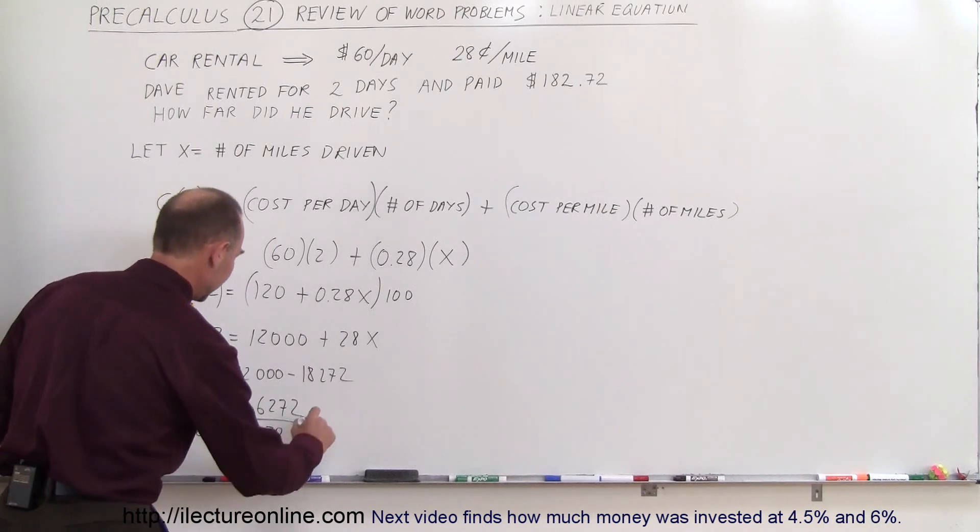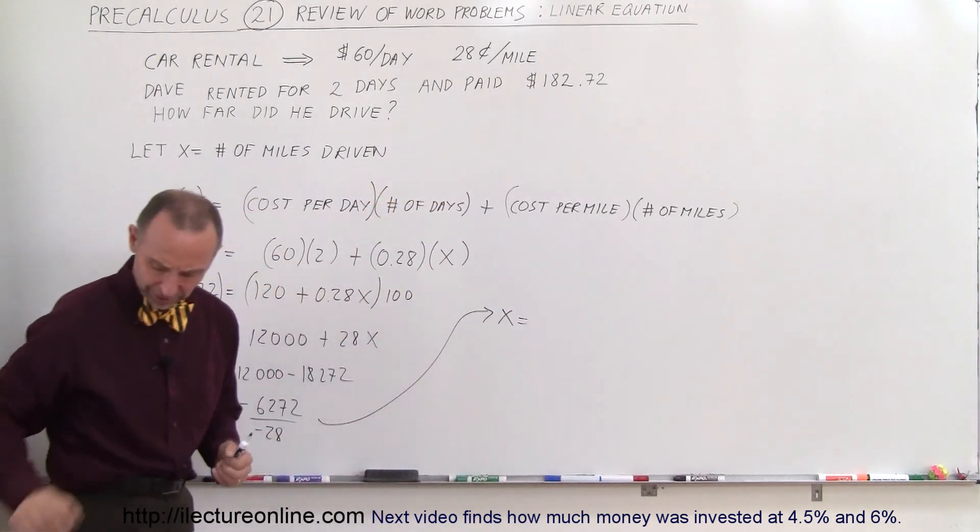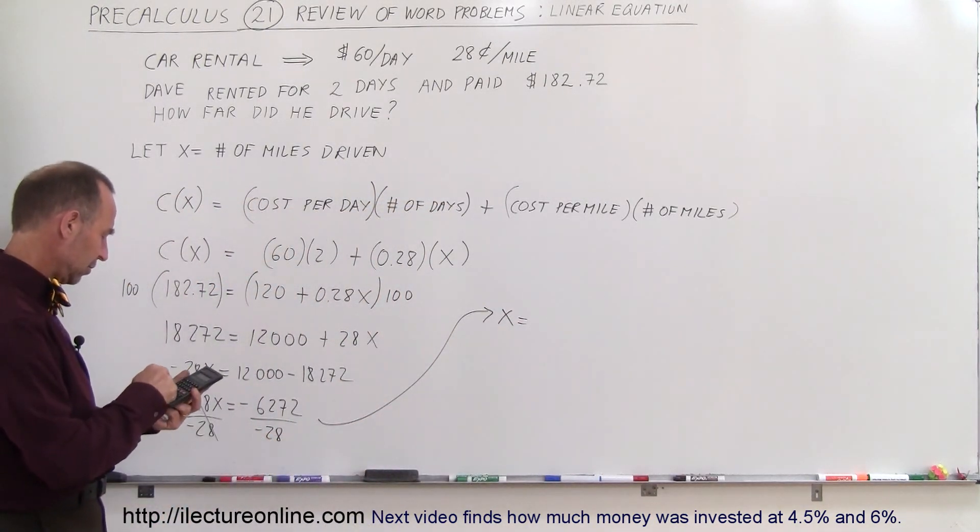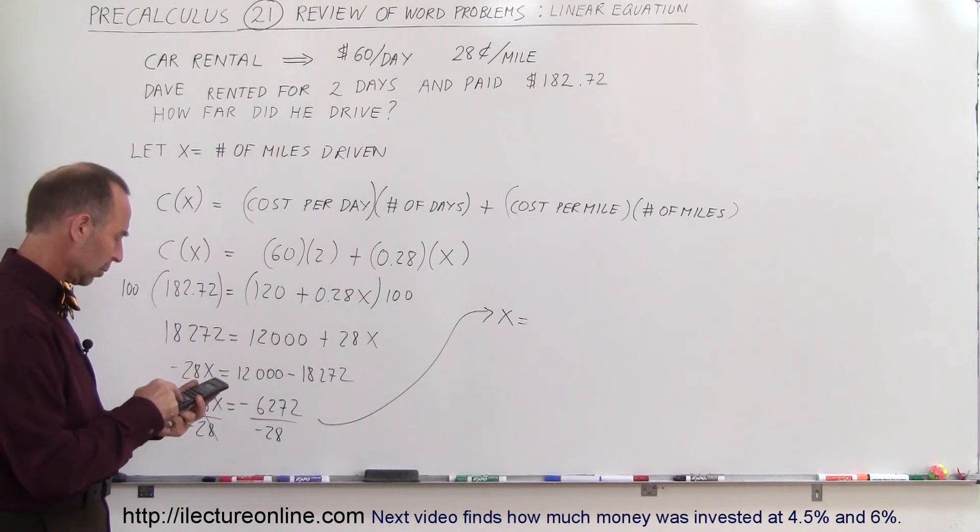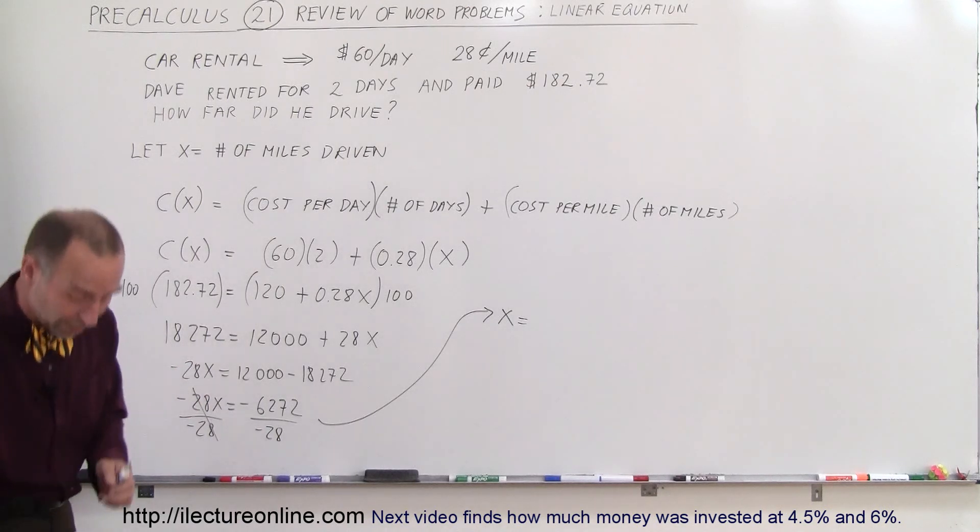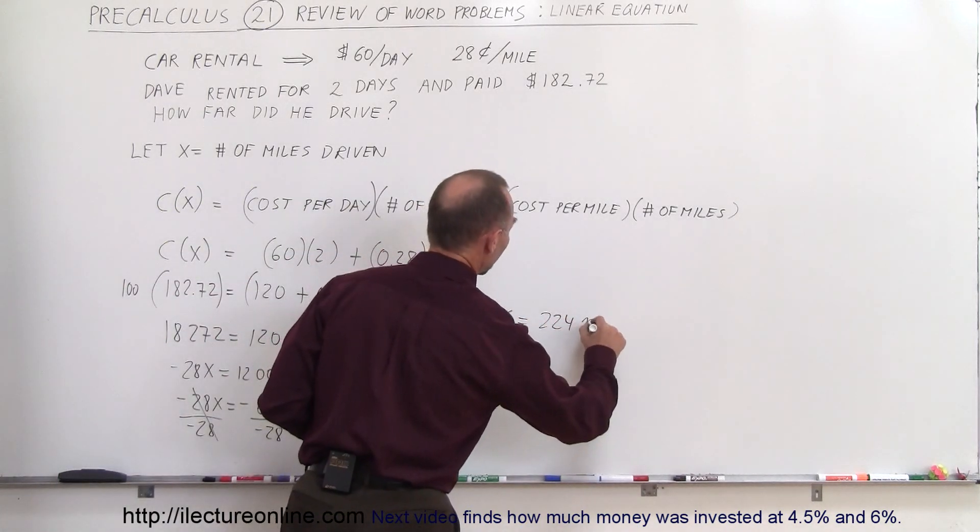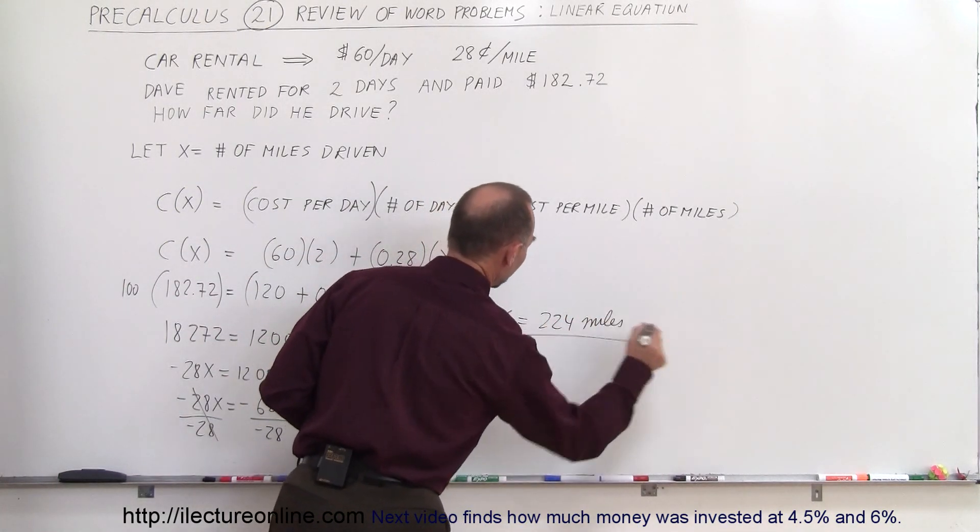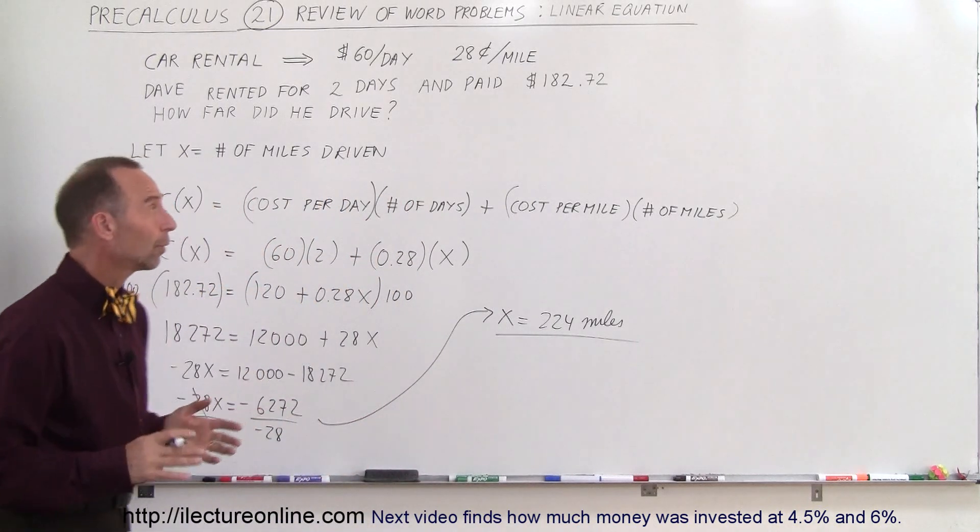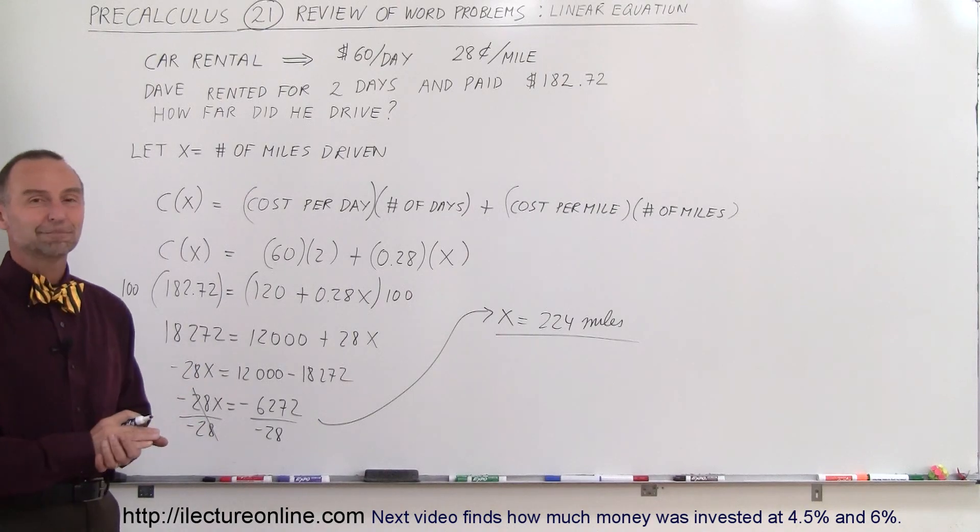And so we get X is equal to, and let's see if I have a calculator with me. Yes, I do. 6,272 divided by 28 equals, oh, let me try it again. 6,272 divided by 28 equals, and it's 224. So X equals 224, and of course, that is in miles. So that's how far Dave drove, and that's why his total cost was $182.72. And that's how we do that.